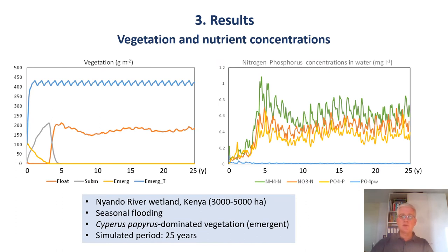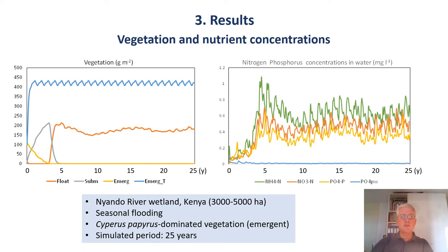Now I will show you some initial results of model runs that we did for these individual wetland sites. I should say that these are part of research that is still ongoing and therefore should be considered unvalidated. Nevertheless, for the Neander wetland in Kenya, we were able to do some comparison of model simulations with observed values from the field. This shows that the model captures the growth of the vegetation and the water quality in a realistic way. The Neander wetland is dominated by emergent papyrus vegetation, and emergent vegetation in the intermittent zone dominates, while in the permanently flooded zone the floating vegetation is dominant. The simulated nutrient concentrations in the water are realistic when compared to observed values, and the short-term variation seen in the graphs is caused mostly by seasonal wet-dry changes.